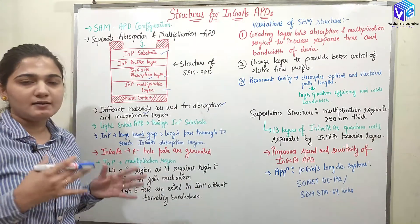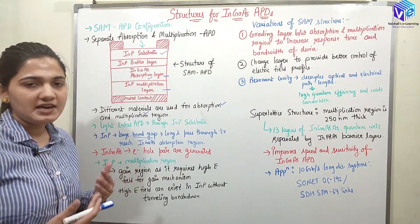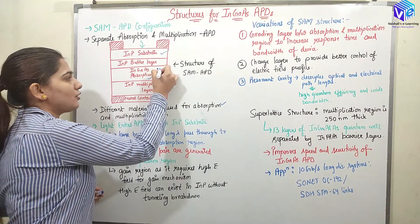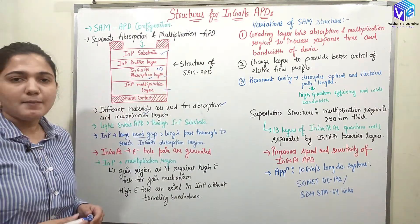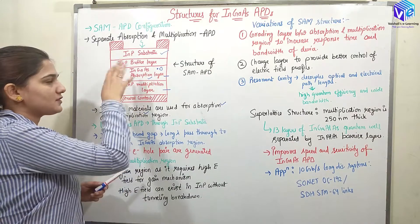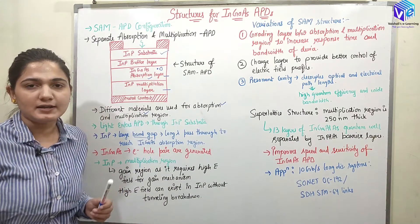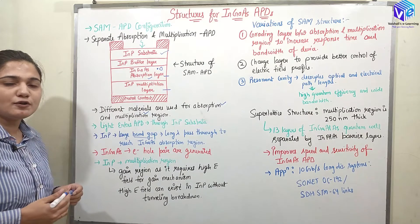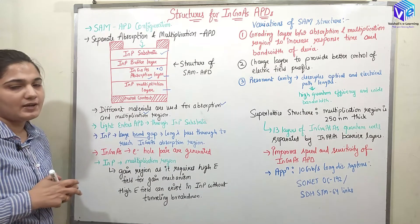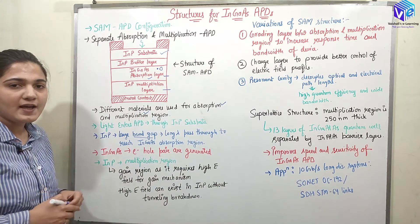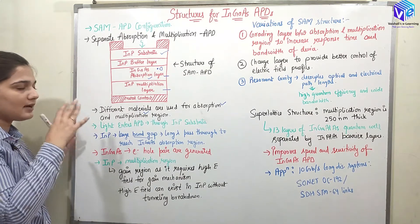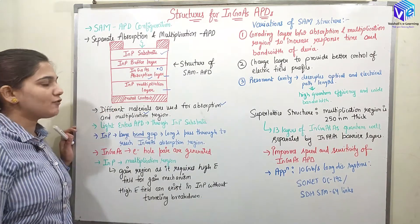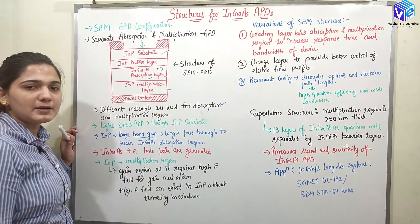Even if we use very high wavelength light, we can still generate electron-hole pairs in the indium gallium arsenide region, which was not possible for the indium phosphide. Once the electron-hole pairs are generated, we have a lot of carriers, and they are going to move with the drift velocity towards the indium phosphide multiplication layer.